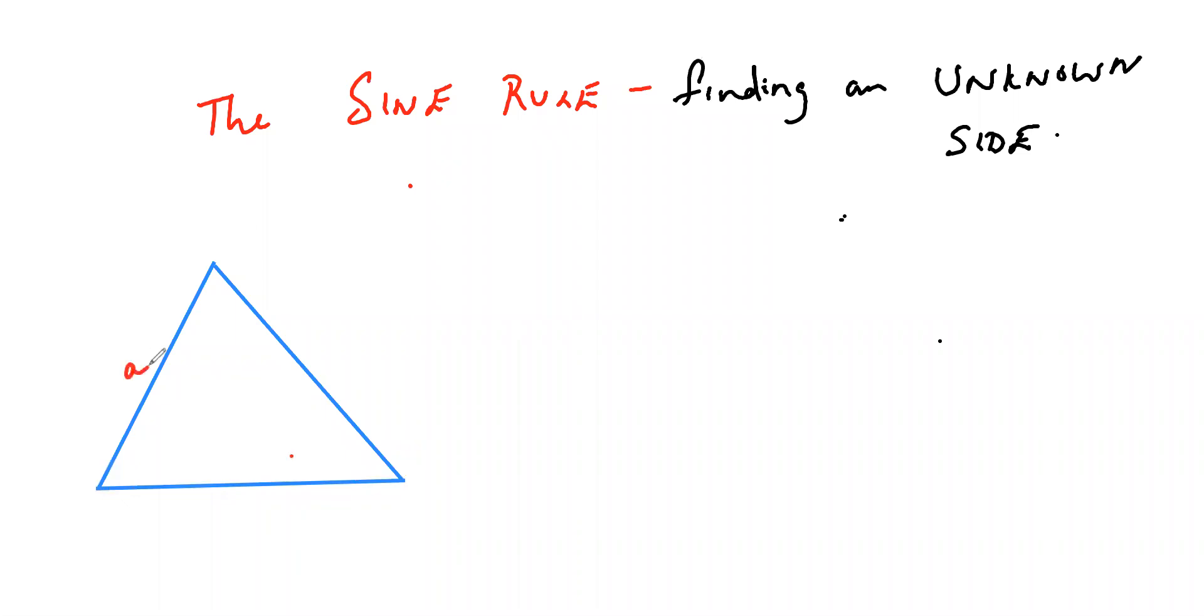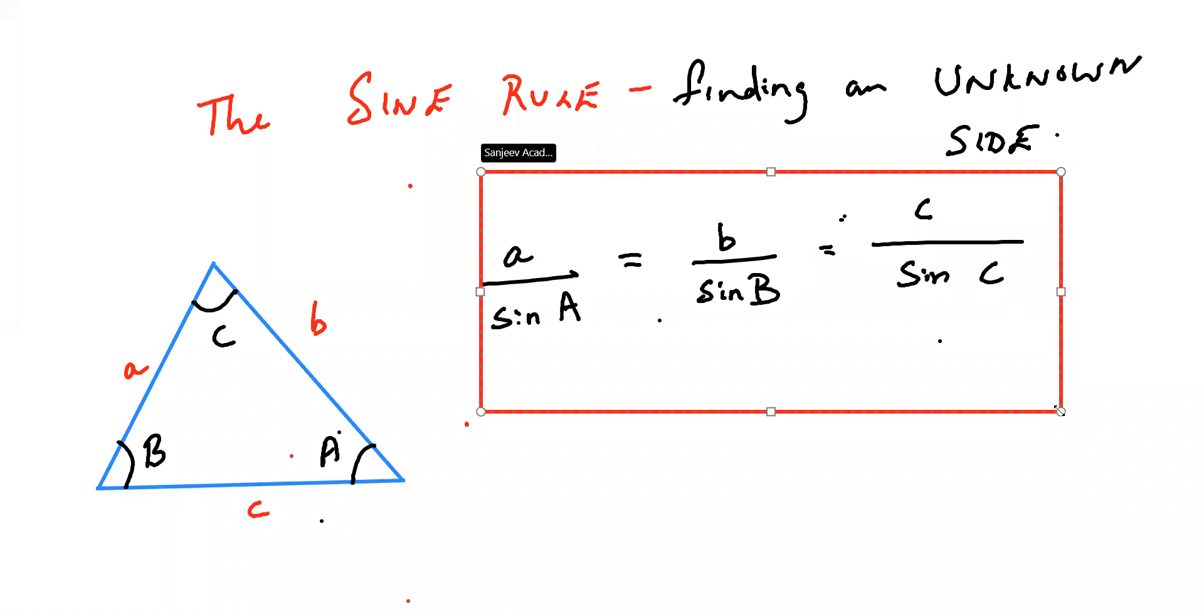So sides I will draw with small letters A, B, and C respectively. Angles... There is a very simple formula for this. That formula is for finding an unknown side using a sine rule: A by Sine A equal to B by Sine B equal to C by Sine C. So this I have to put it in a box. This is for finding what? Unknown side.